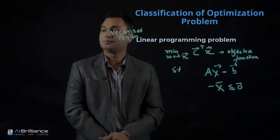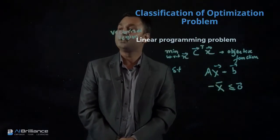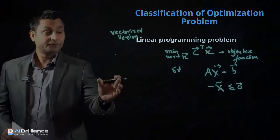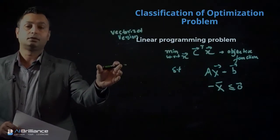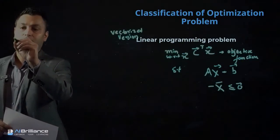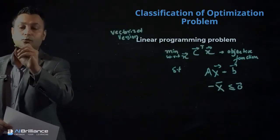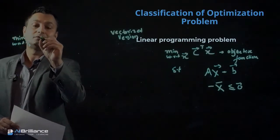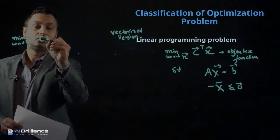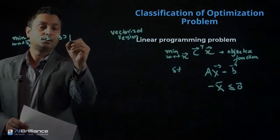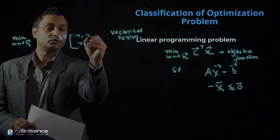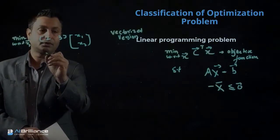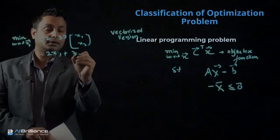Let me give you a simple example of what A and b mean in the context of an actual problem. Let's say you have a problem: minimize with respect to vector x, where you have coefficients 2 and 3 multiplied by x1 and x2. So essentially, we are minimizing an objective function given by 2x1 plus 3x2. That is our objective function.